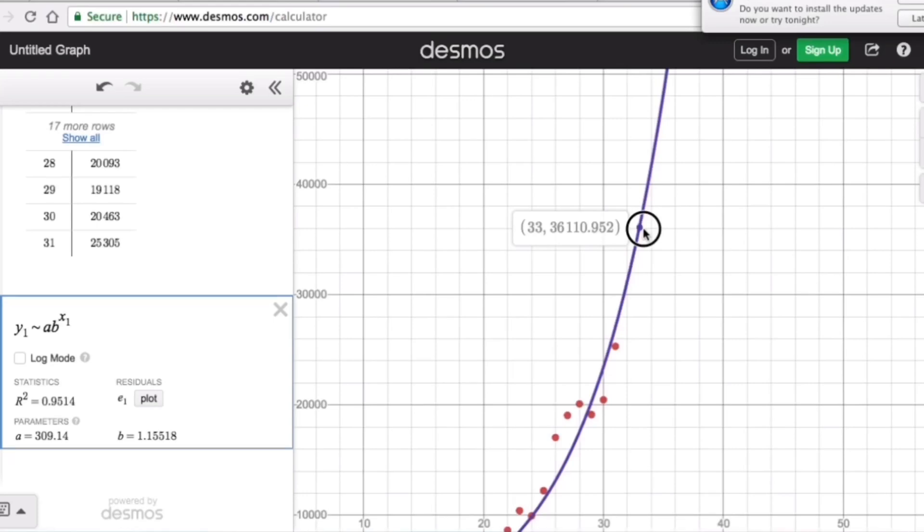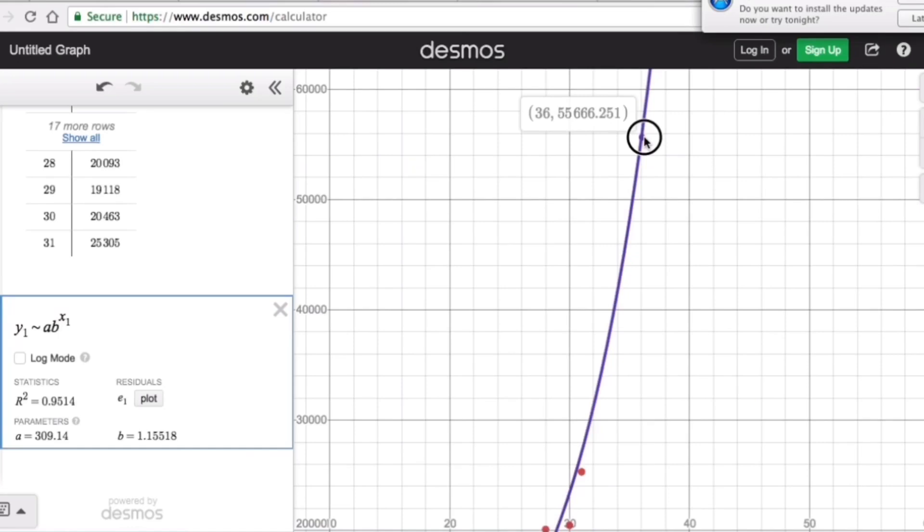Now let's have April 5th. April 5th can be represented as 36. So we go all the way to 36. And so the number of cases on April 5, which is represented as 36, is 55,666 cases.